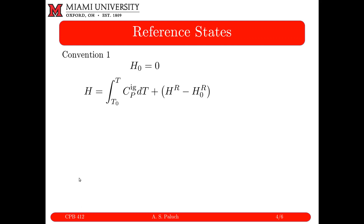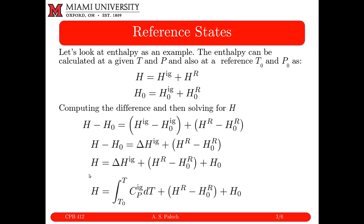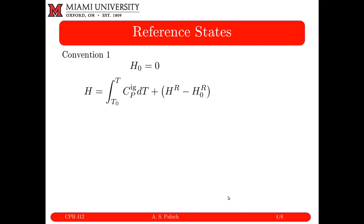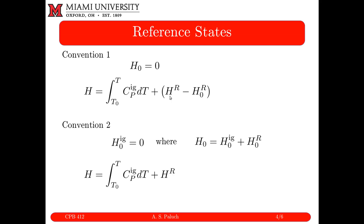We'll define our reference state in two different ways to allow us to calculate what appear to be absolute quantities. Convention one is to assume that H₀ is equal to zero. So H equals the integral from T₀ to T of C_P_ideal_gas dT, plus H_R minus H₀_R. For an ideal gas, C_P is typically tabulated and represented as a simple polynomial, so this first term can be readily evaluated. When you define H₀ equal to zero at a specified temperature and pressure, this term can be readily calculated.